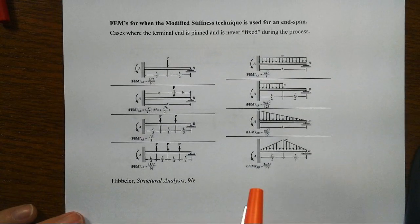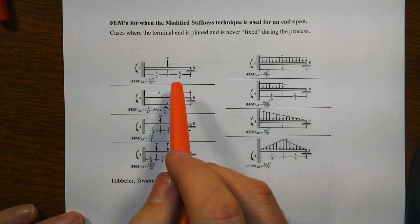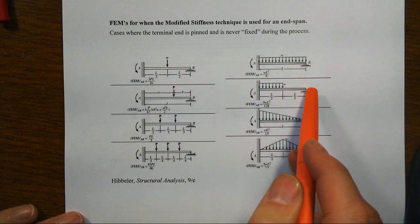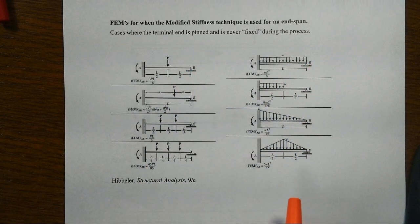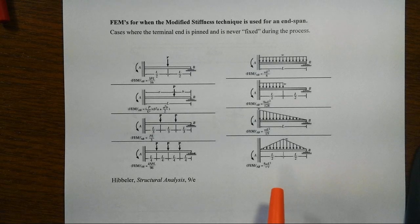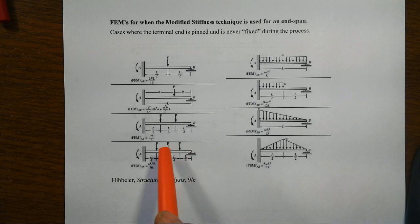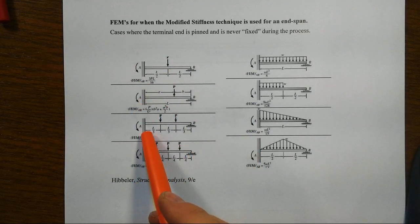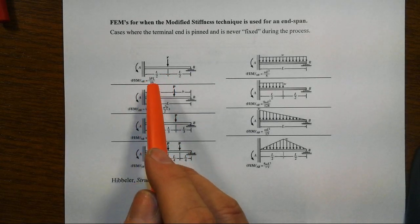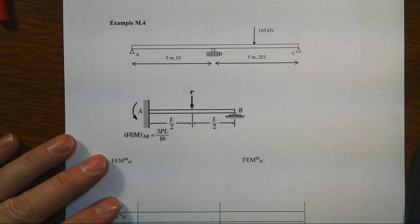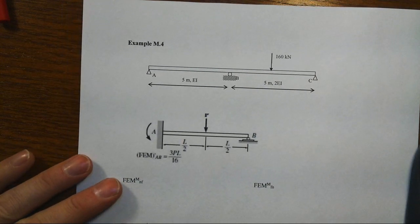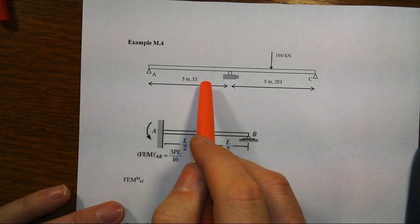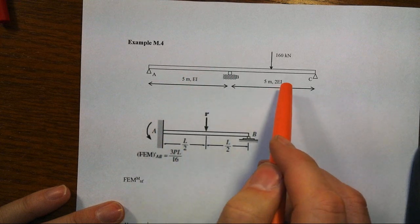Number one, when you go to get the modified stiffness for that span, you have to use a different set of tables where you reflect that one of those ends is pinned, that moment is going to be zero, that rotation will be a very specific relationship to what happens at this other end. For all these different load cases, you now get adjusted fixed-end moments. We're going to want the one that's up here, that's 3PL over 16. Here's our structure that we're dealing with. This is the same one that we had in example 3, that we've got a span of 5 meters on the left and right.